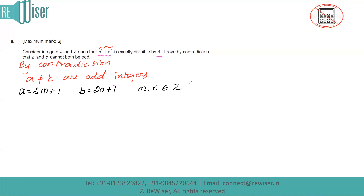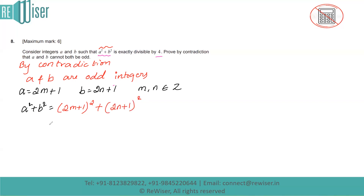Now if I consider a squared plus b squared, we need to show this is divisible by 4. In place of a I substitute 2m + 1, and in place of b I substitute 2n + 1, and both are squared. If I expand these using the formula (a + b)² = a² + 2ab + b², I can work through the algebra.